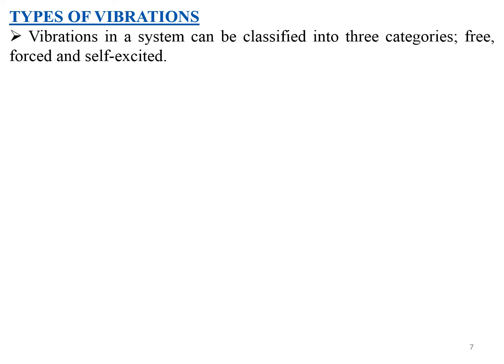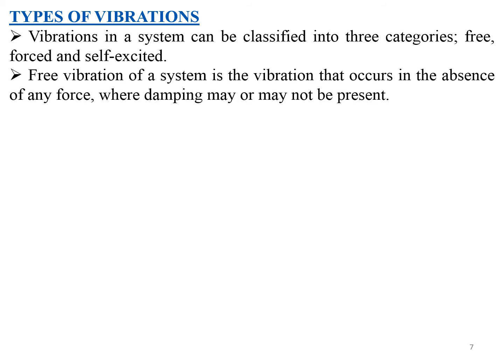Coming to the types of vibrations — vibrations in a system can be classified into three categories: free vibration, forced vibration, and self-excited vibration. Free vibration is the vibration that occurs in the absence of any external force. In this condition, damping may or may not be present. Damping is mainly used to control vibrations.